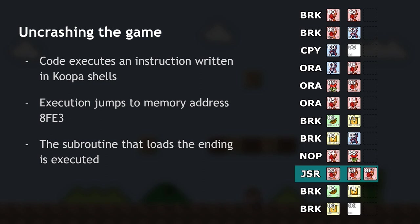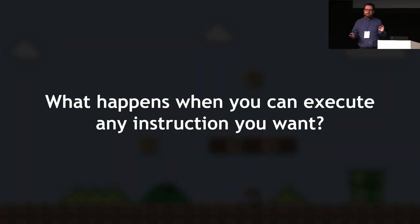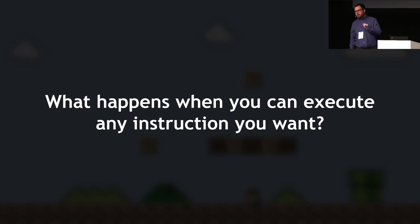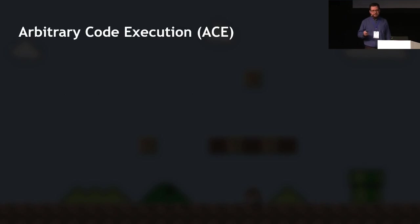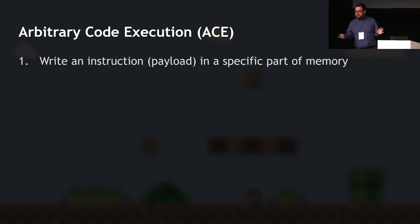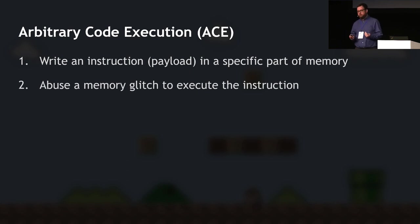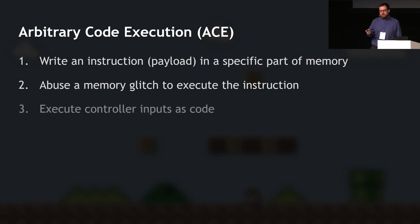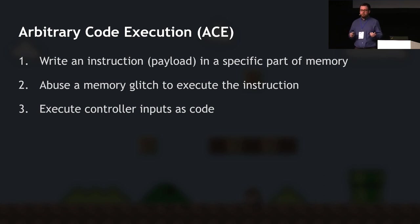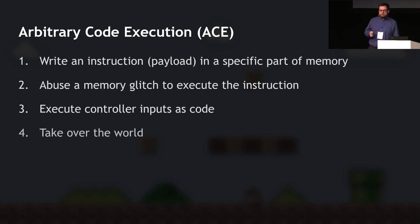But now the question is: the Koopa shells can be anywhere on screen, so you can do anything with that line of code. What happens when you can execute any instruction you want? It's like a genie that grants you one wish — and of course you ask for more wishes. This is arbitrary code execution: the ultimate thing you can do with a TAS, the ultimate way to break the game. Step one: write an instruction in a specific part of memory — in this case, the Koopa positions. Step two: abuse a memory glitch to execute that instruction — going out of bounds, hitting a node block, crashing the game, and leading execution into that part of memory.